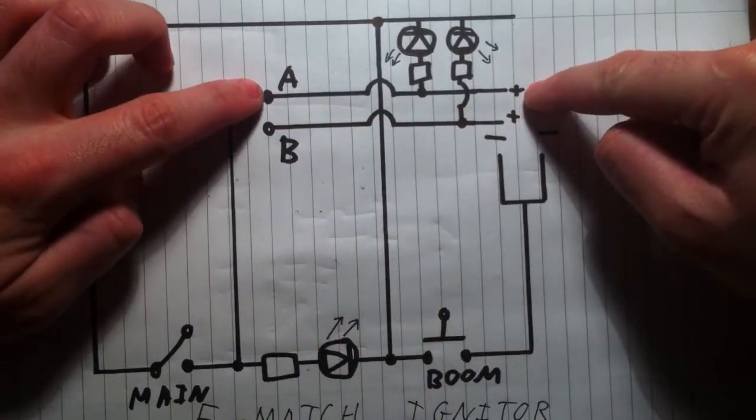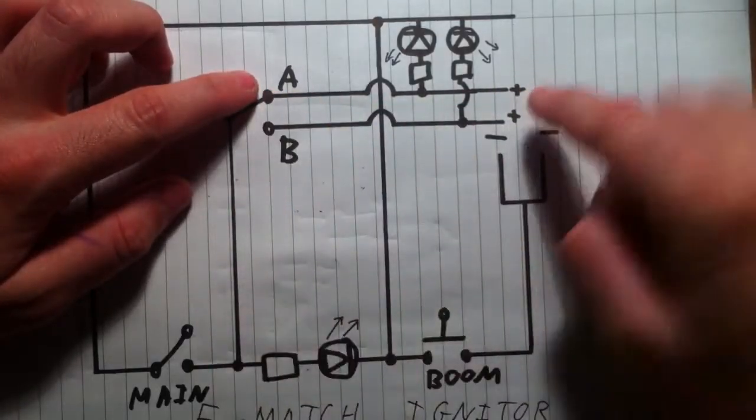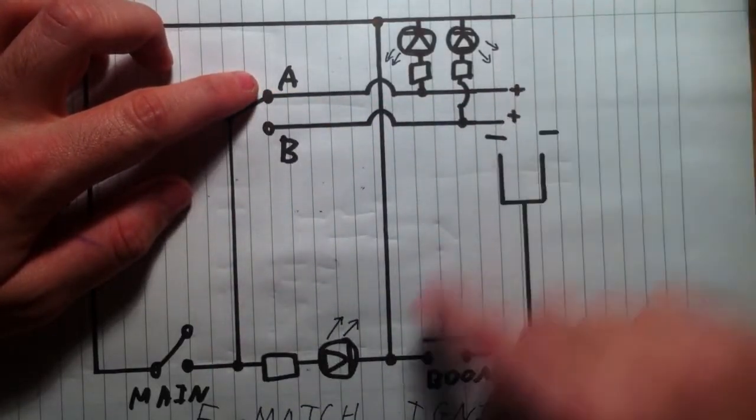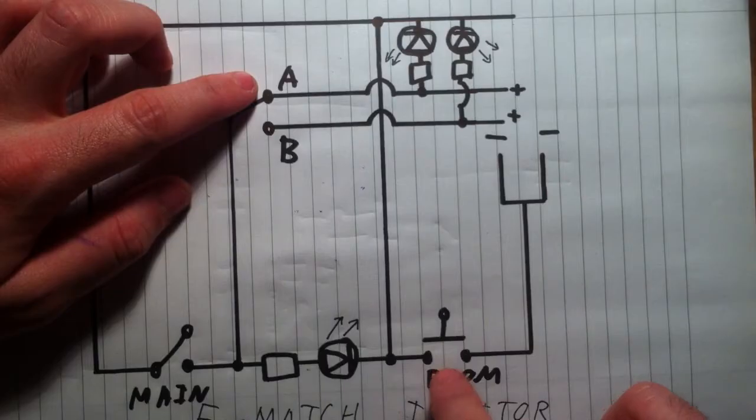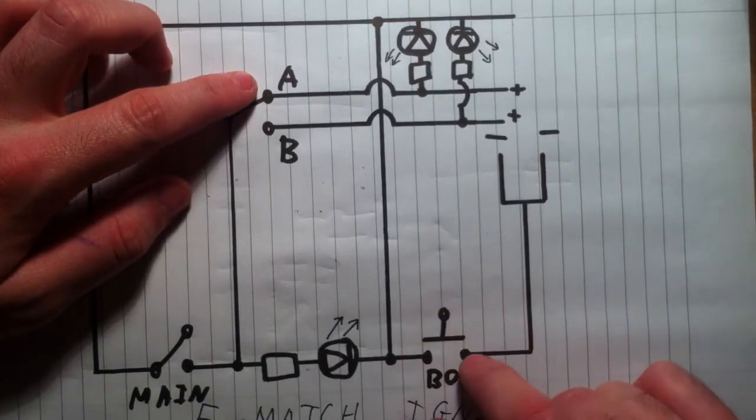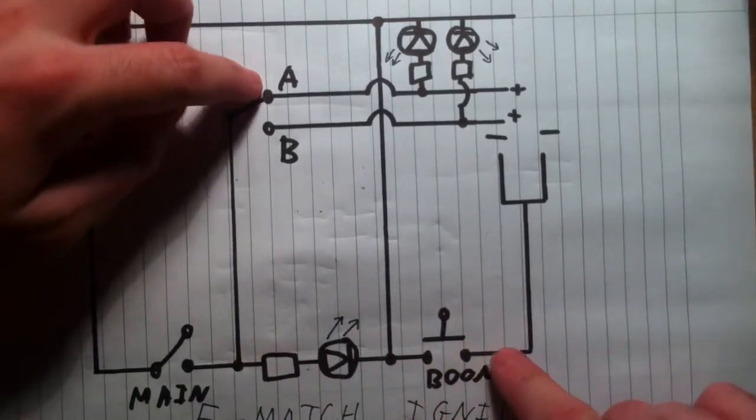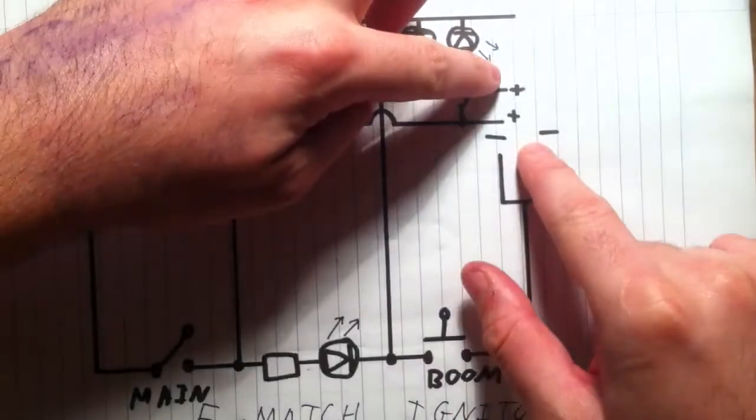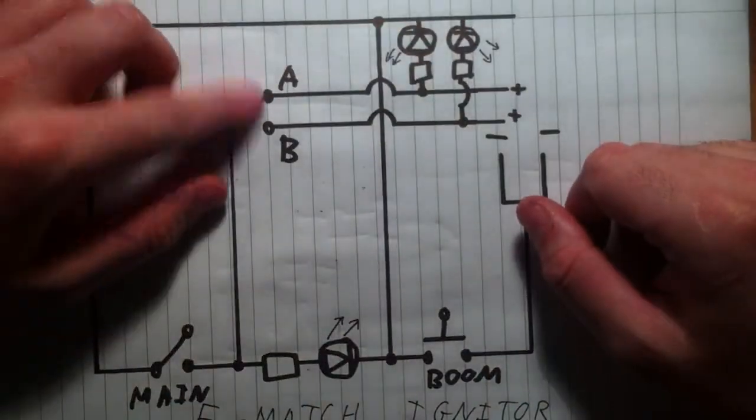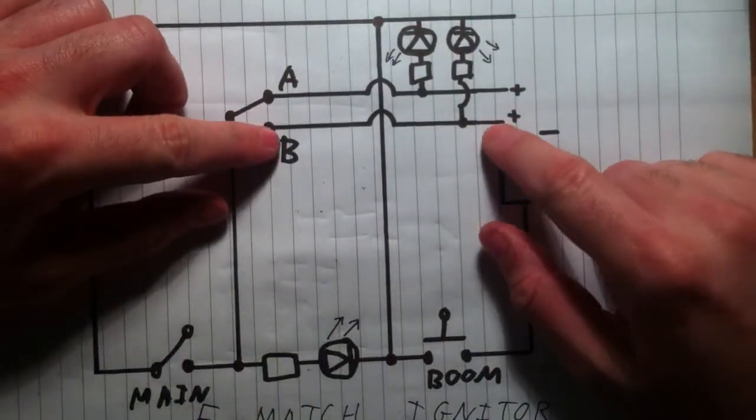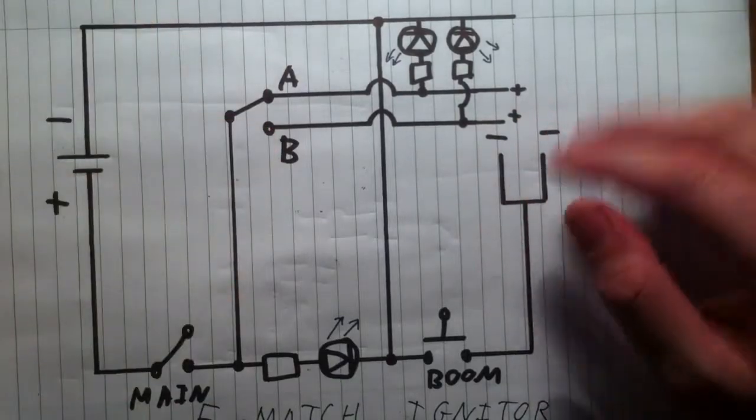It also puts power through this section here which goes to the positive of your channel A. And with your e-match connected across it, once you press this switch, this is your big boom switch, your ignition switch, it will complete the circuit there. Very simple. And it will set off your e-match. Swap into channel B, it will set off channel B and only channel B. Very simple.